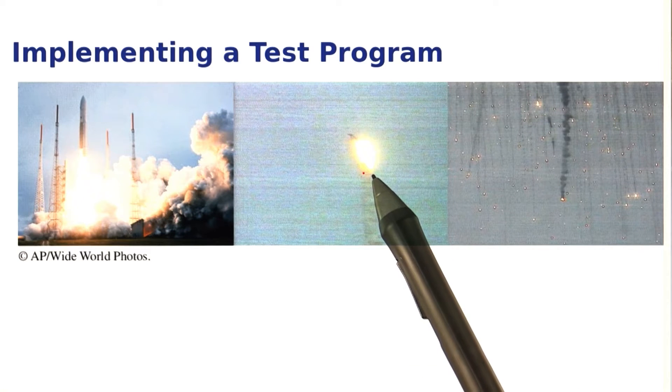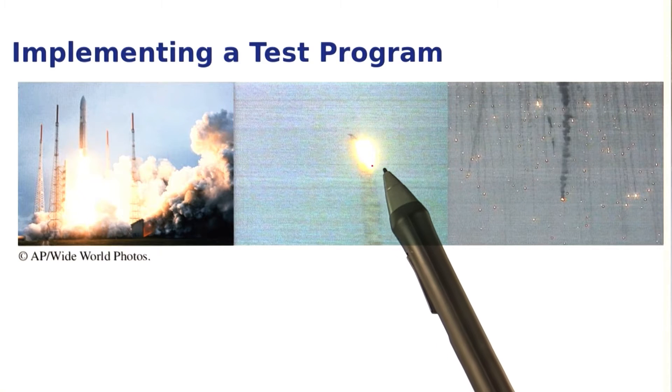What happened here is that the rocket had a device to maintain its position, and it actually had two backups. And because of that, the rocket engineers didn't think they had to test it.